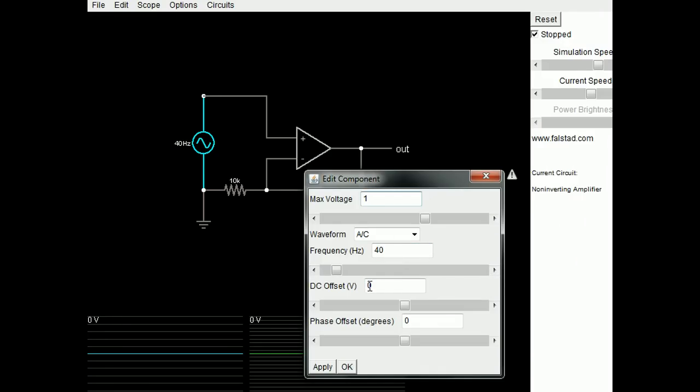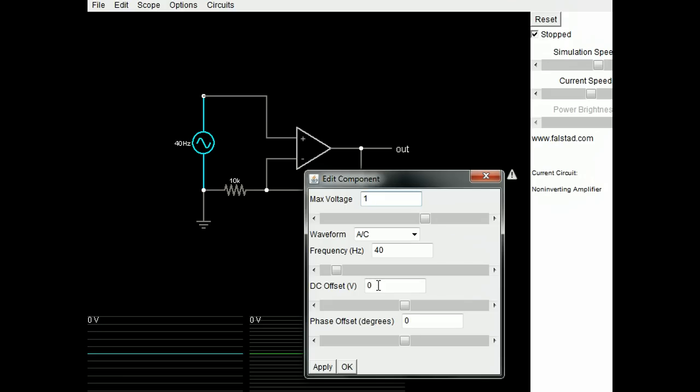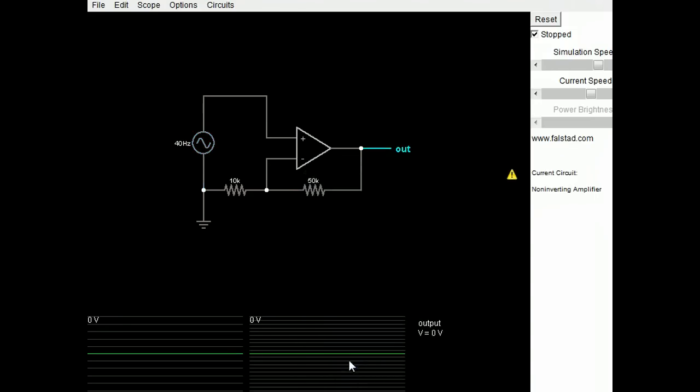No DC offset, which would just shift the wave up or down. No phase offset. That's left to right, signal left to right shifting.